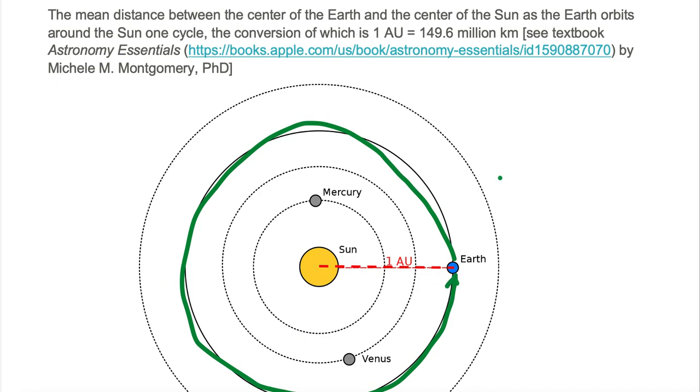As seen, the orbit of the Earth around the Sun is not a perfect circle, it's more like an oval, therefore the radius changes as the Earth orbits around one time.